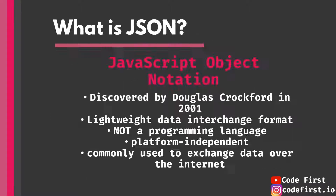So to get started — what is JSON? The acronym stands for JavaScript Object Notation. It was discovered by Douglas Crockford in 2001. We say discovered and not invented because this sort of syntax or notation existed previously in the form of JavaScript objects. In 2001, Douglas Crockford looked at that and realized this notation could be used for something more — and that's how JSON came to be.